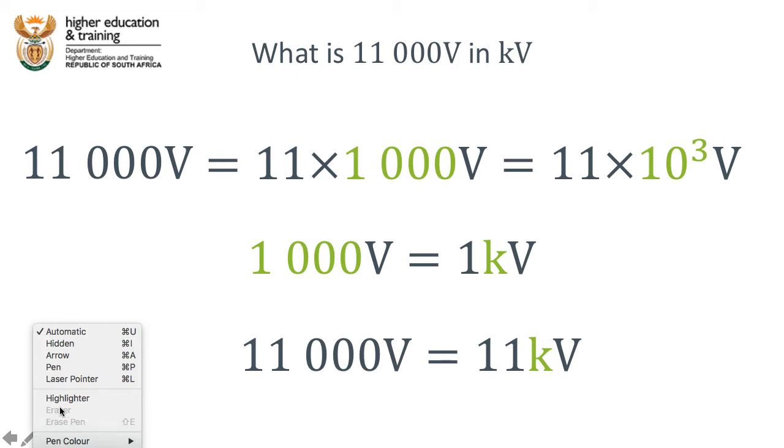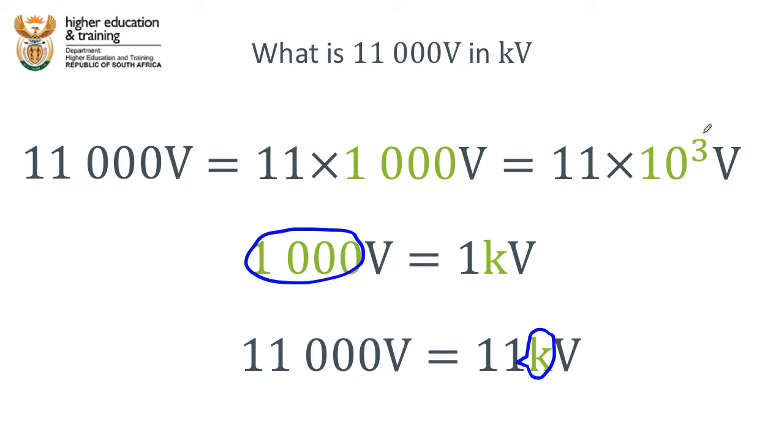Now I want you to notice all of these things mean 1,000. The K means 1,000, obviously the 1,000 means 1,000 and the 10 to the power 3 means 1,000. Those are all just different ways we have of writing the number 1,000 either in full or using exponential form or using a unit form.